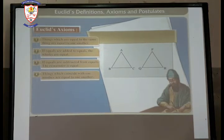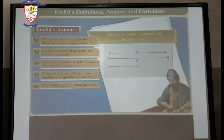Fourth one: Things which coincide with one another are equal to one another. Here we have taken two triangles, that is ABC and PQR. When each and every vertex coincides with each other. The whole is greater than the part.